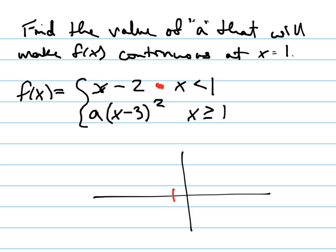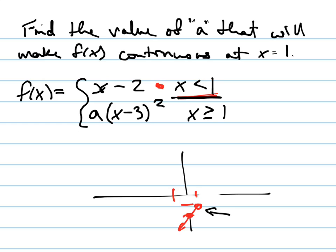Negative 2 is the y-intercept, so it's going through negative 2 and it's got a slope of 1. But it's only defined when x is less than 1, so at this point right here I need to erase everything to the right of that. It goes to the left, and it's an open circle because it doesn't say equal to.